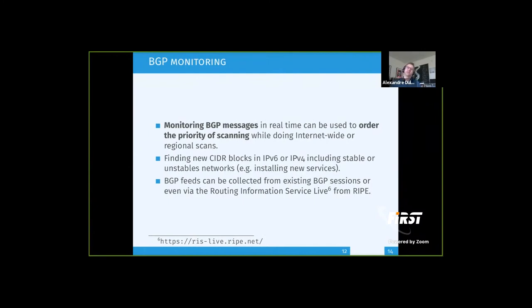Another approach is BGP monitoring. When you need to scan, scanning the whole internet is not always efficient. Sometimes you just want to scan things that are very recent or unstable, because unstable networks are often in active setup mode. You can prioritize scanning on networks with the highest probability of having a vulnerable machine. Monitoring BGP messages lets you find new CIDR blocks announced in IPv4 and IPv6. You don't need a full BGP setup — RIPE provides a feature called Routing Information Service Live (RIS Live), which streams all BGP sensor messages from around the world. It's a great source for finding new and unstable networks.